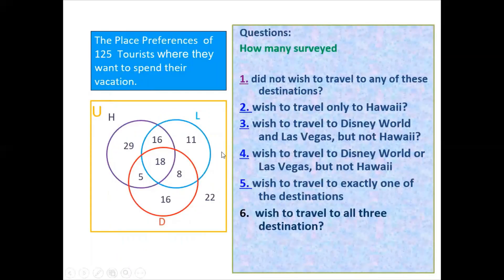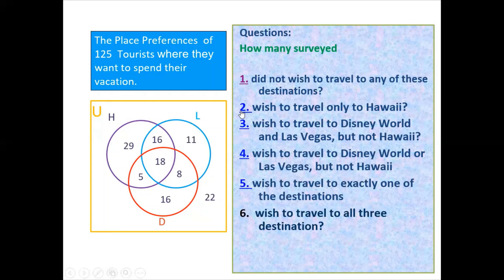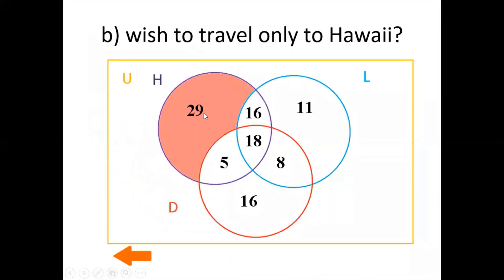Question 2: How many surveyed wish to travel only to Hawaii? The only-Hawaii region is 29. Remember, the other values inside the Hawaii circle also include people who want to go to Las Vegas or Disney, so only Hawaii is 29.